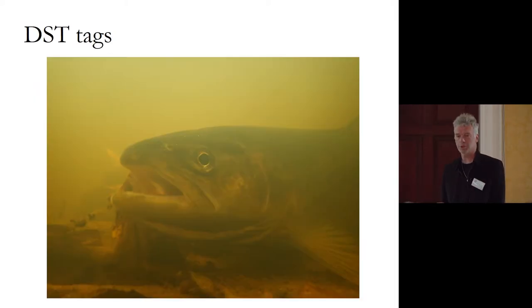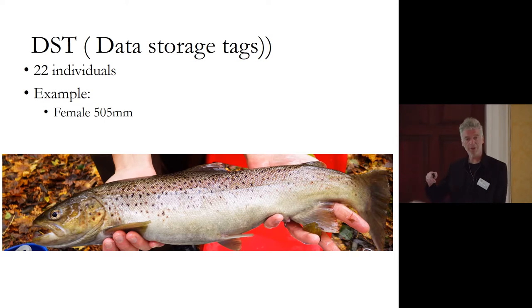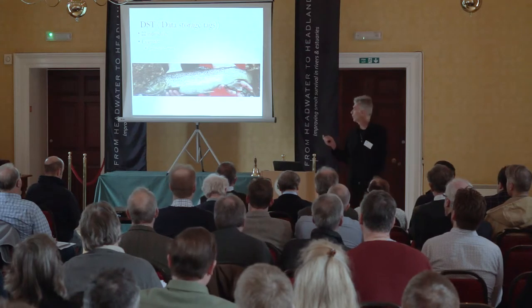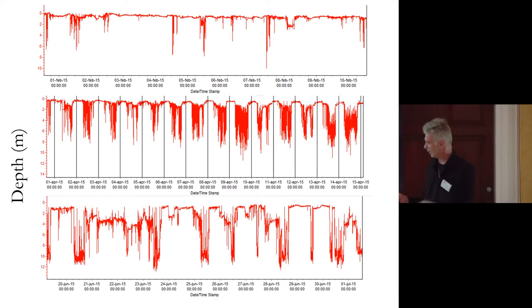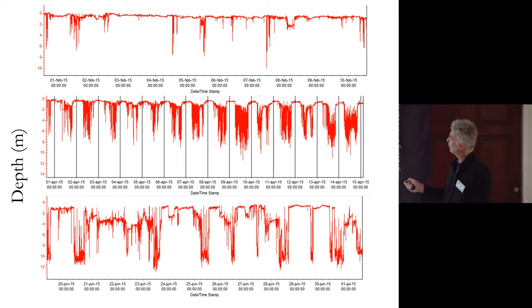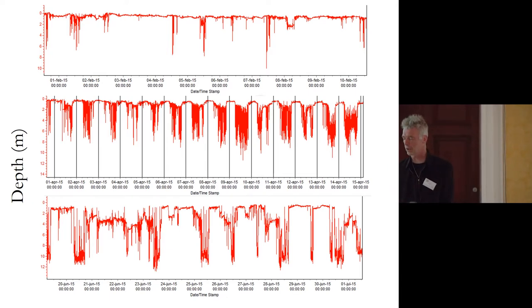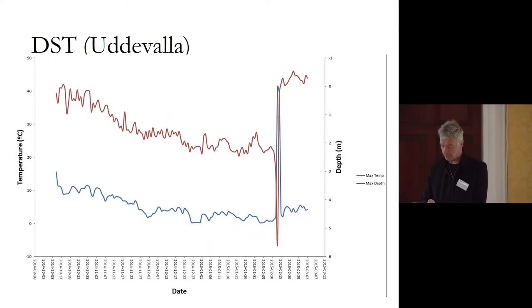We also used data storage tags on adult individuals to see what depths they use, how much time they spend at sea, and whether they go up and down. Fish were tagged in the stream and ideally recaptured the following year. It was a high-risk project since we needed to recover the tags. Results showed fish diving down to 8–10 meters at times, but most of the time they are surface feeders. Out of 22 tagged fish, we've recovered six — none in the stream, unfortunately. They were all found by people walking their dogs on the shore, with the tags indicating the fish had died.